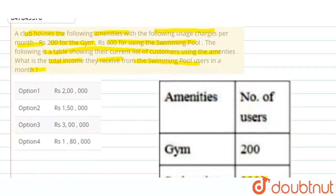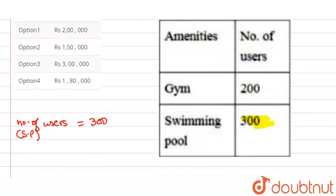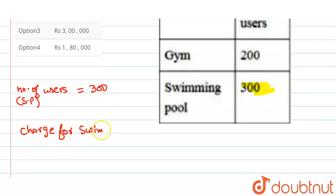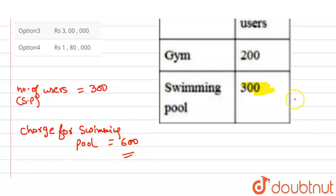Aur, ek bande se woh kitna leta hai? 600 charge karta hai. Means, charge for swimming pool — yhe kitna hai? Yhe hai humara 600 ke equal.